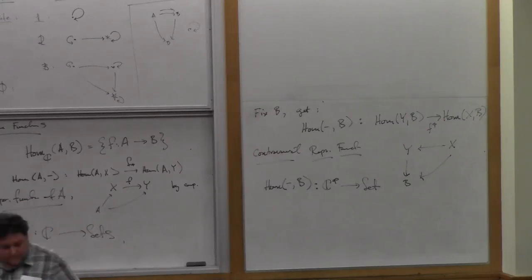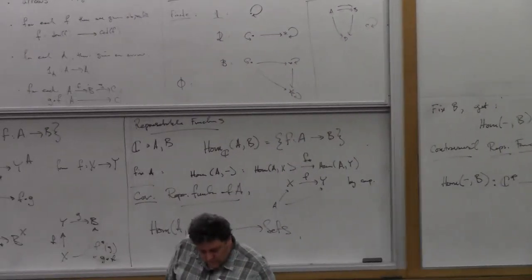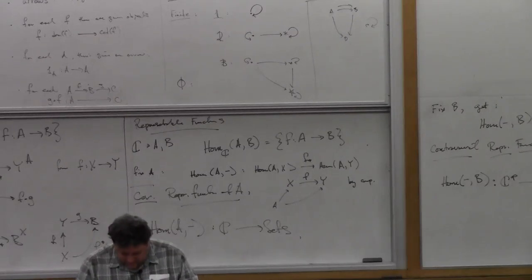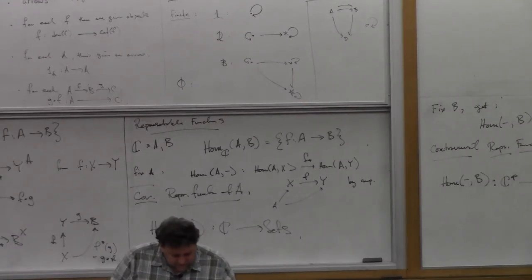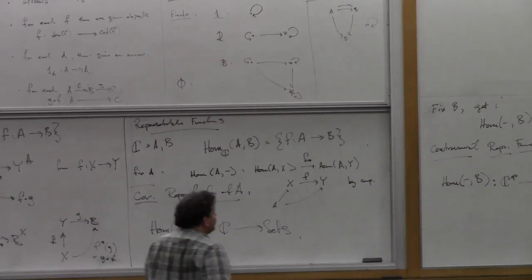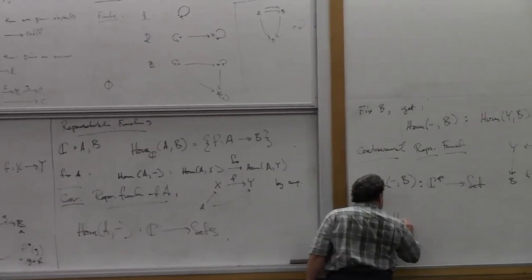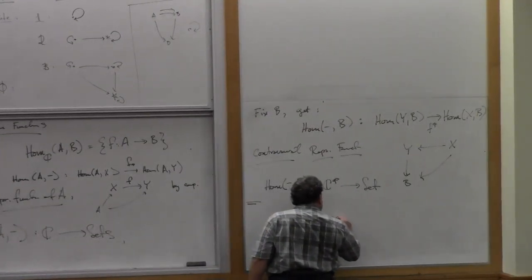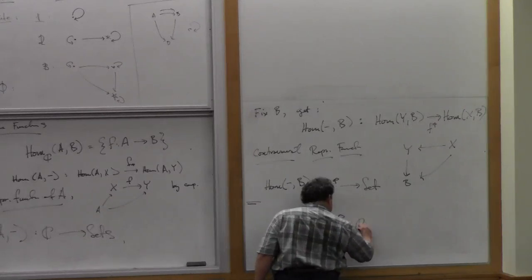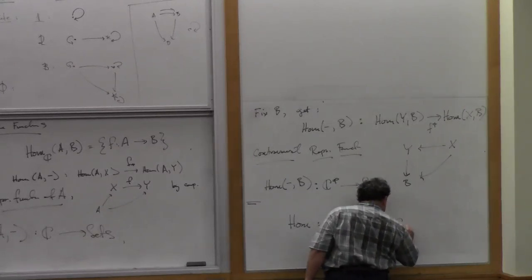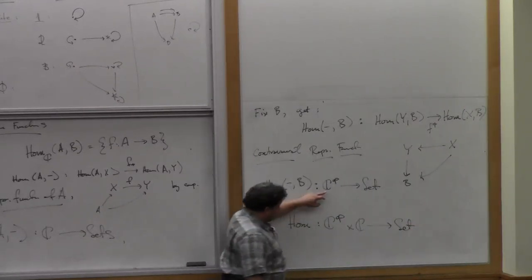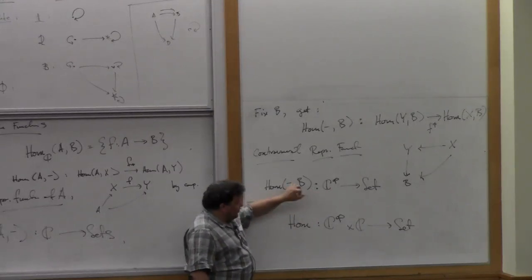Maybe that's all I need to say right now. So you have some homework exercises, and you'll get used to these representable functors. I think a homework exercise is to show the whole thing HOM is a functor on the product category into set. And these are just its two parts.